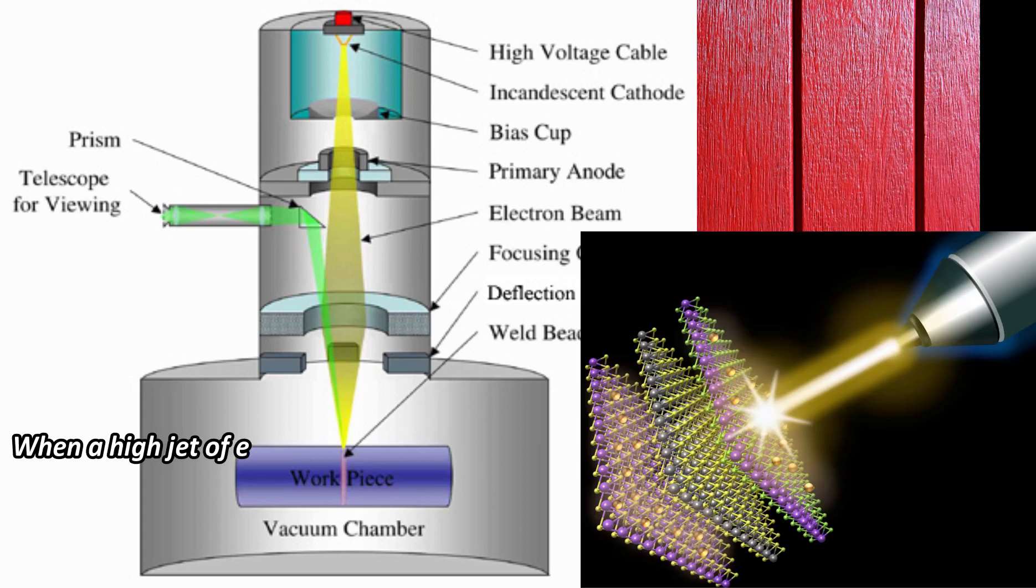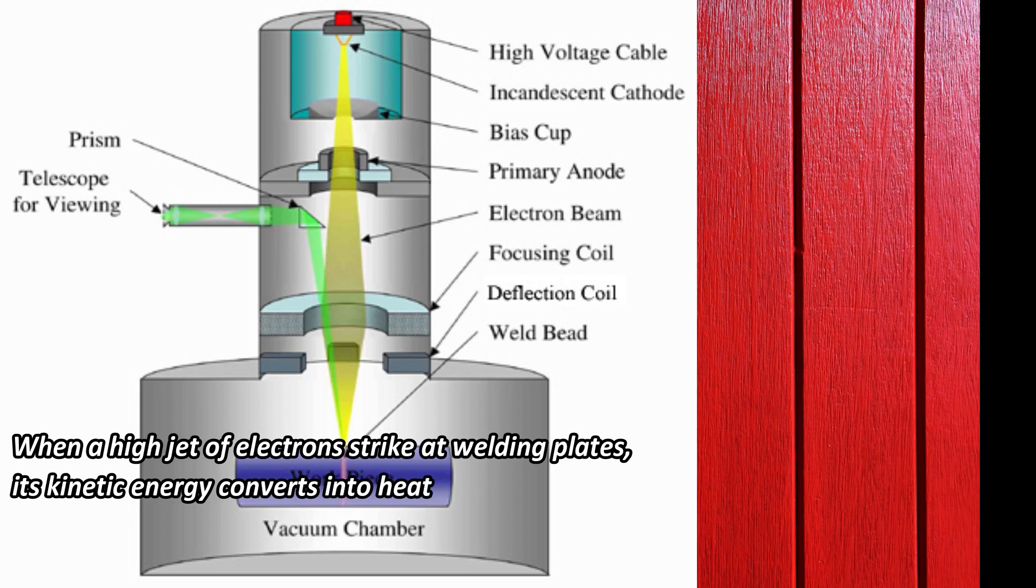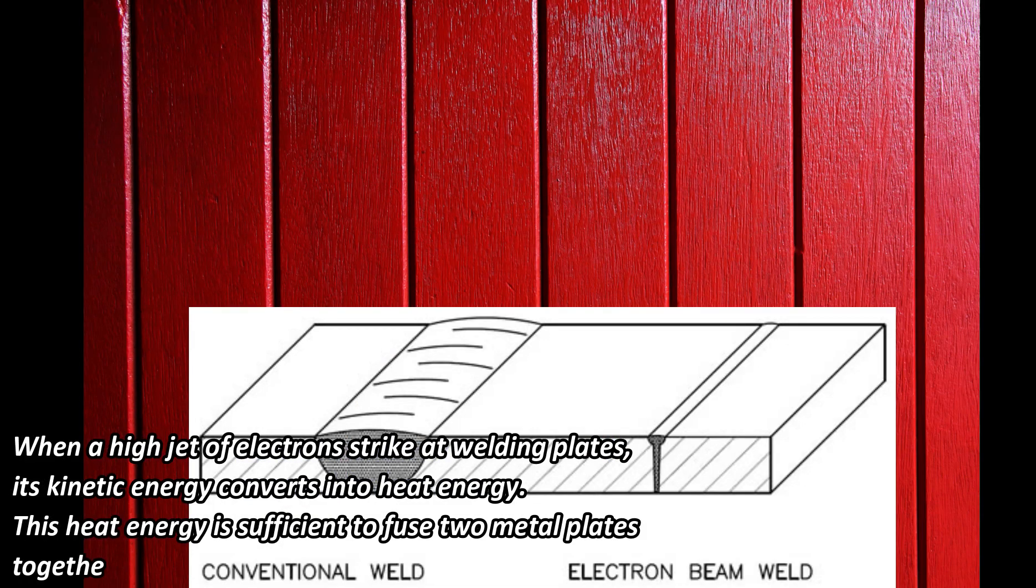When a high jet of electrons strike at welding plates, its kinetic energy converts into heat energy. This heat energy is sufficient to fuse two metal plates together to form a weld joint.